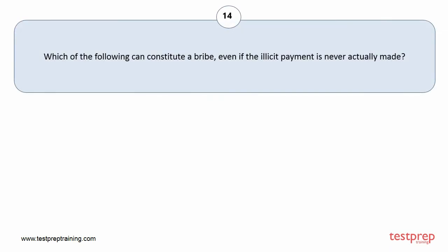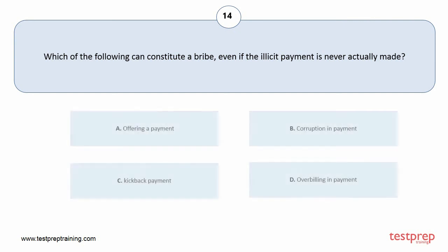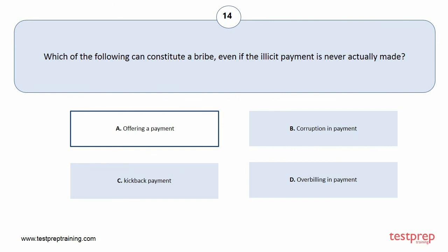Question number 14. Which of the following can constitute a bribe, even if the illicit payment is never actually made? Your options are A. Offering a payment, B. Corruption in payment, C. Kickback payment, D. Overbilling in payment. The correct answer is option A.